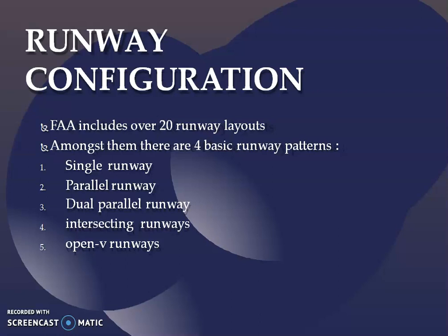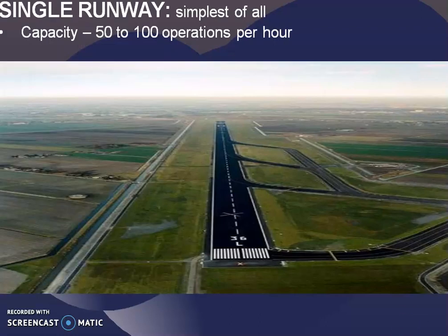The single runway, parallel runway, intersecting, and open V runways. The figure shown here is the single runway, which is the simplest of all the runways. Per hour, 5200 operations can be made.